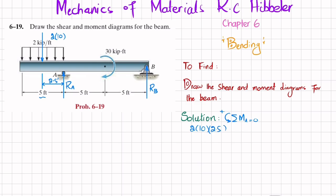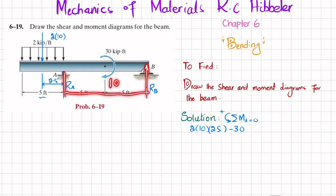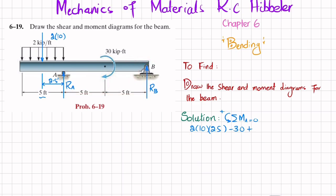The second moment is the external moment, which is clockwise, so it is negative: minus 30. The third moment is due to Rb times its perpendicular distance of 10 feet, which is counterclockwise and positive: plus 10 × Rb = 0. Solving this gives Rb = 0.5 k.